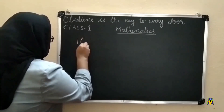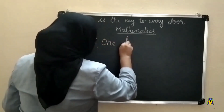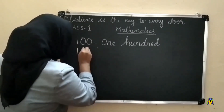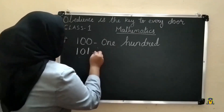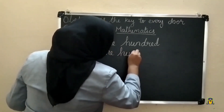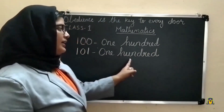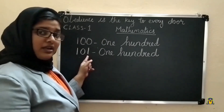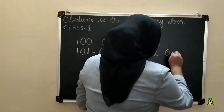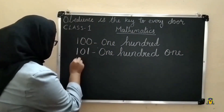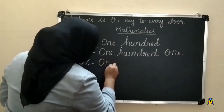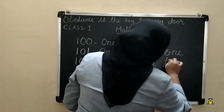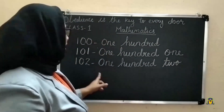After 100, we write 101. We already know the spelling of one hundred: O-N-E H-U-N-D-R-E-D. In the ones place, 1 is there, so we write one hundred one. Then 102: one hundred T-W-O, two.